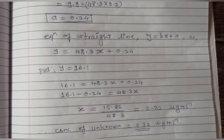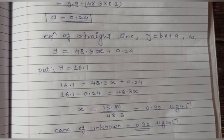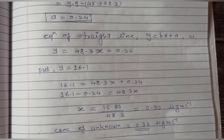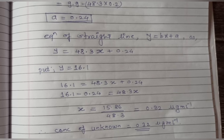In conclusion, from the linear regression method or least squares method, we first find the slope and intercept, then determine the best straight line equation y = bx + a. If a y value is given, we can rearrange the equation to find the concentration of an unknown substance x.